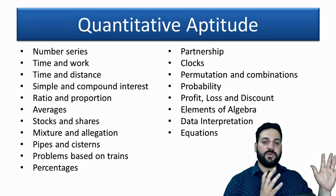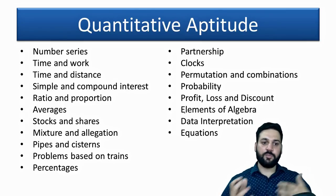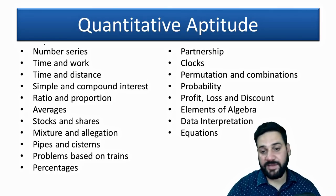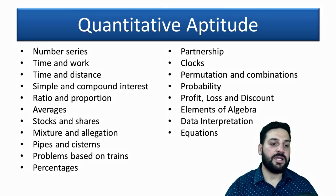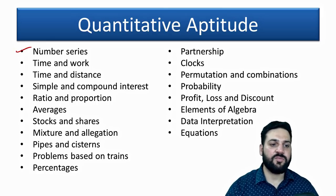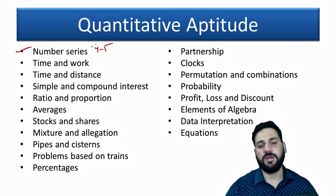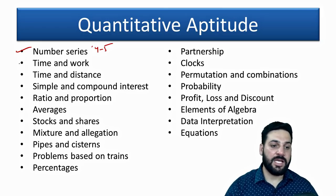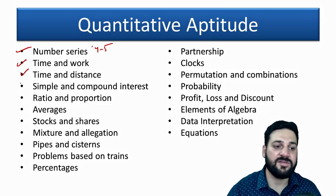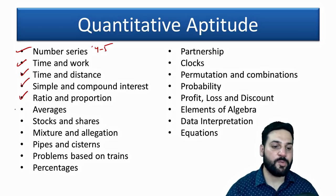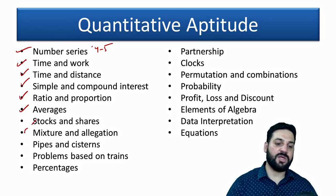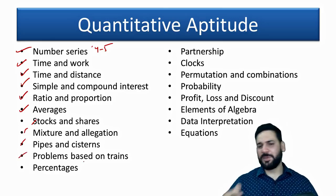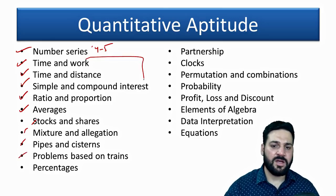For Quantitative Aptitude, covering both Phase 1 and Phase 2, there will definitely be Number Series and Data Interpretation sets — four to five questions each. Other topics include Time and Work, Time and Distance, Simple and Compound Interest, Ratio and Proportion, Average, Stocks and Shares, Mixtures and Allegation, and Pipes and Cisterns.